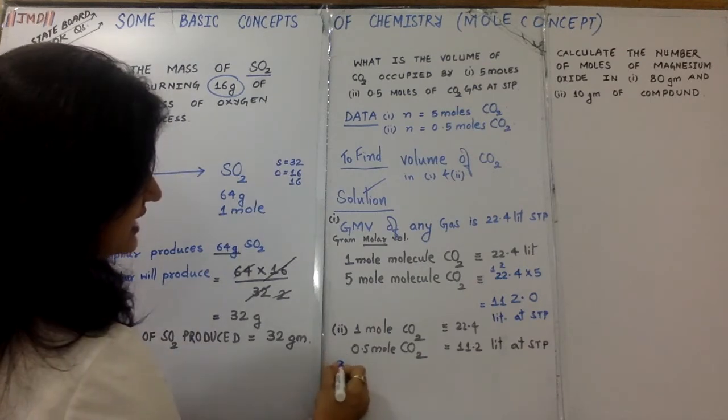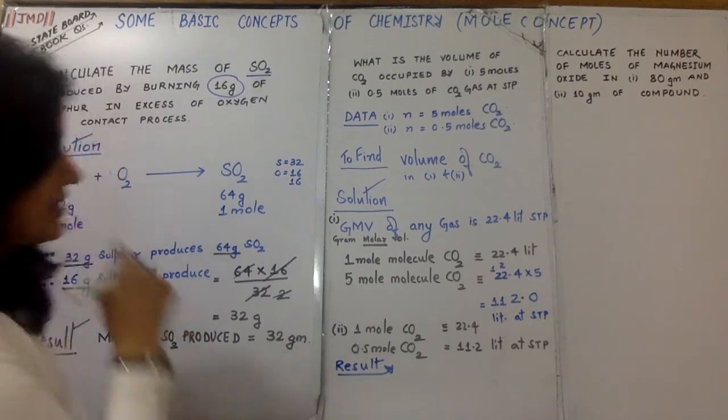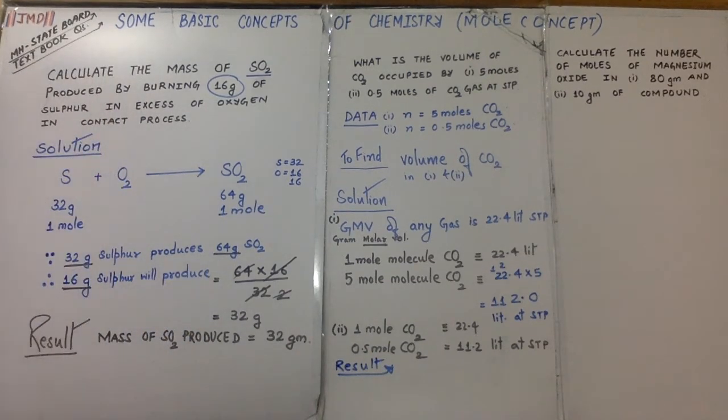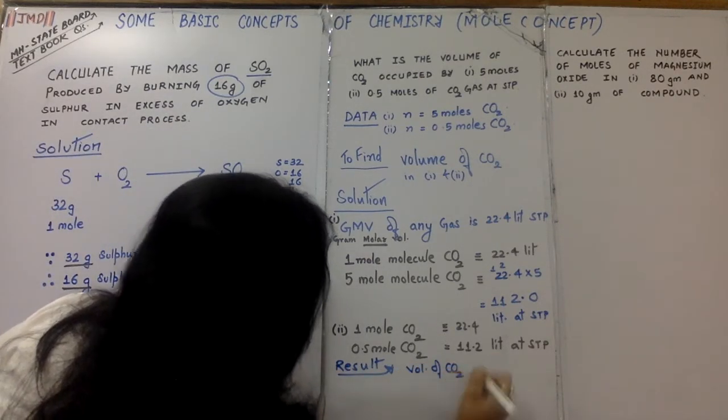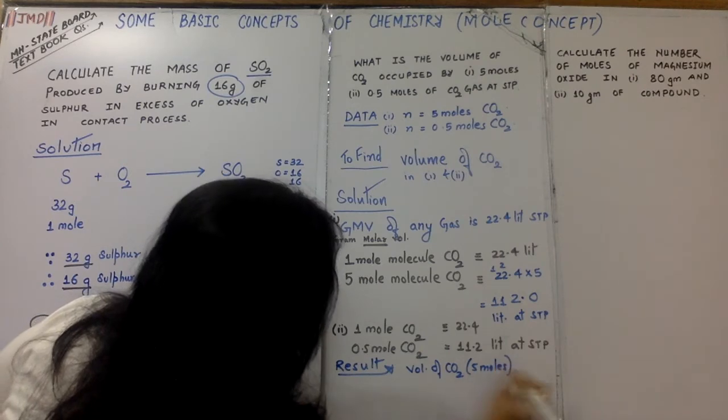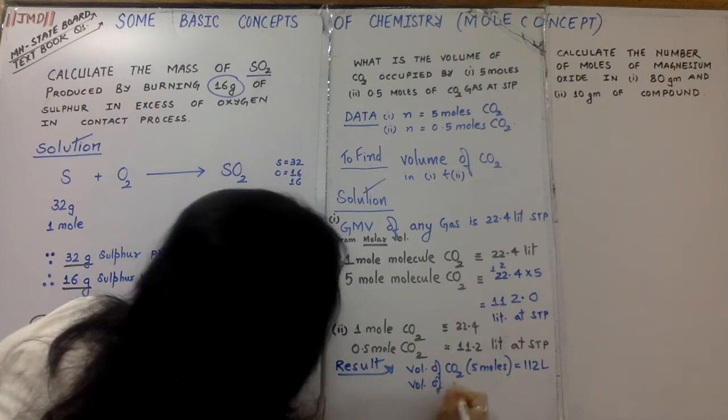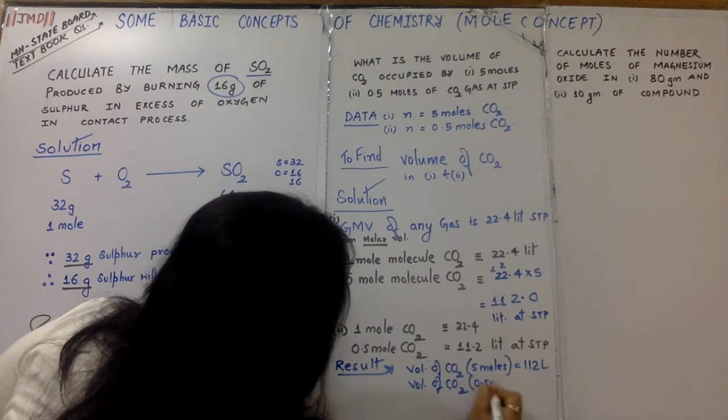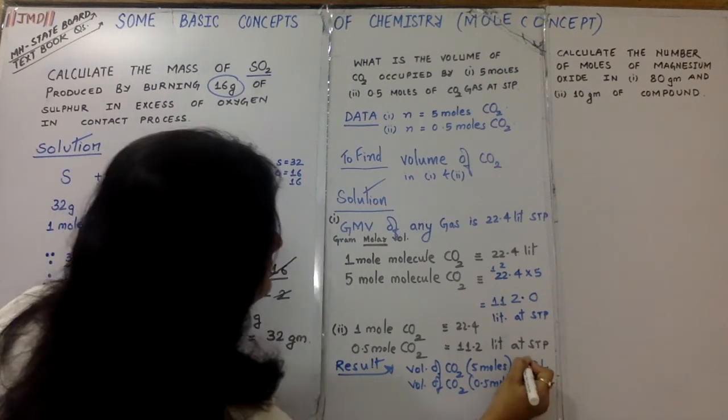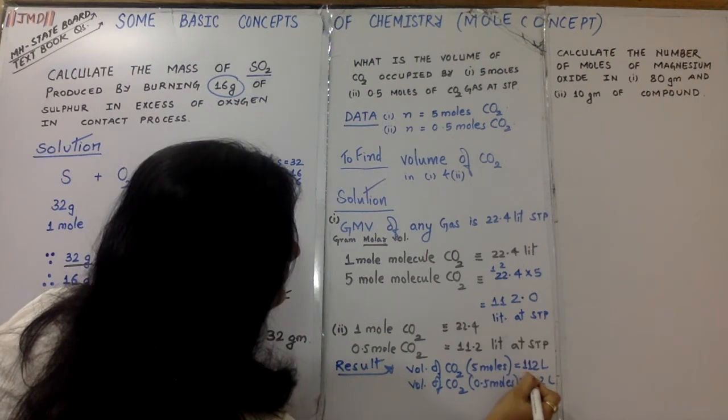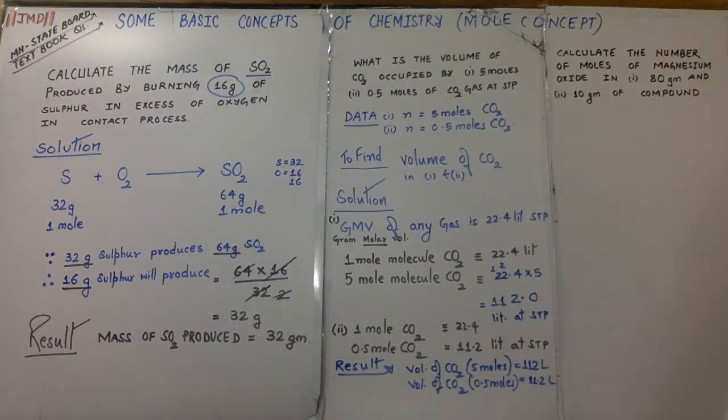Last part of the answer is the result. So how to write the result? Volume of CO2, 5 moles is 112 liters, and volume of CO2, 0.5 moles is 11.2 liters. So that's the way.